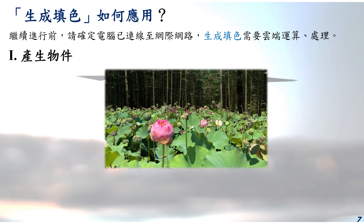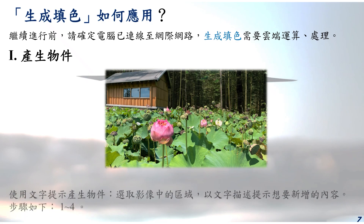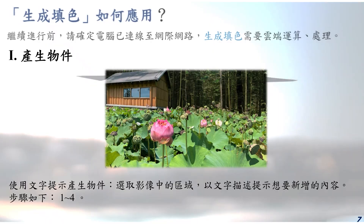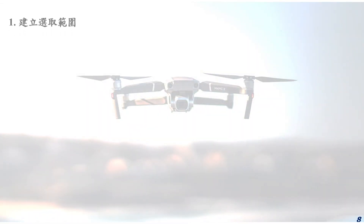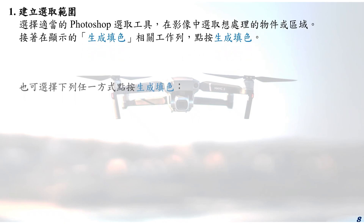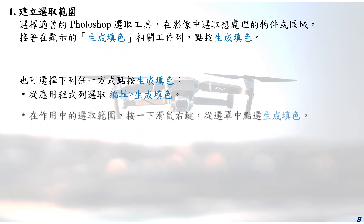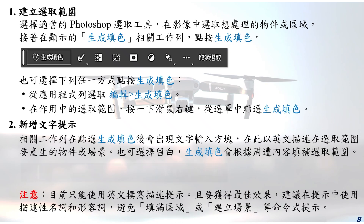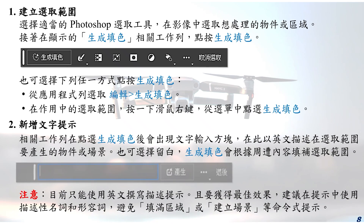针对要置入的小木屋，先框选原稿森林背景左侧适当区域，输入适当文字提示描述想产生的小木屋，最后完成执行。效果关键在合适的文字描述提示。步骤一：建立选取范围，选择适当的 Photoshop 选取工具，在影像中框选想处理的物件或区域，接着在显示的生成填色相关工作列点按生成填色。步骤二：新增文字提示，在工作列出现的文字输入方块中，以英文描述在选取范围要产生的物件或场景，也可选择留白。